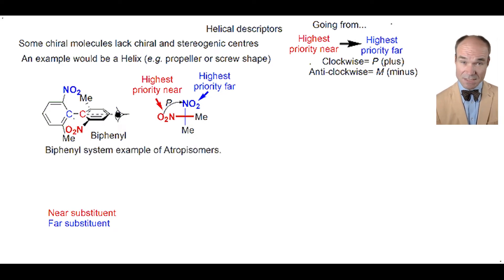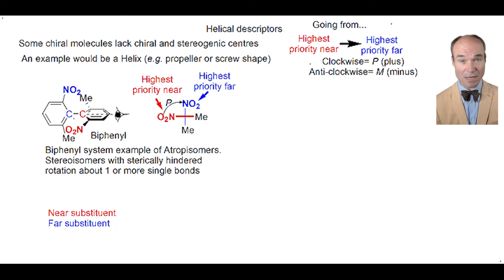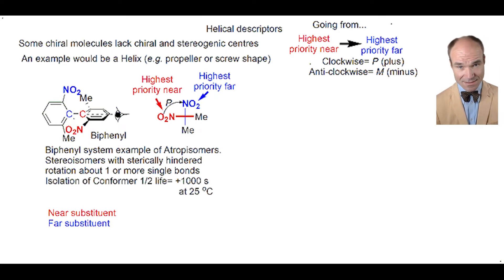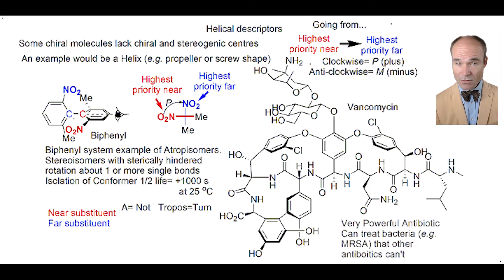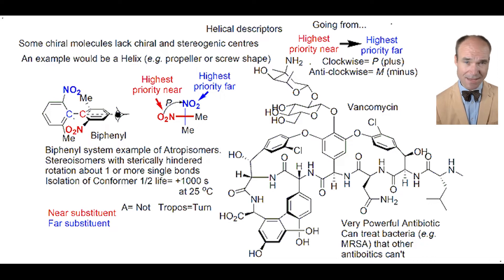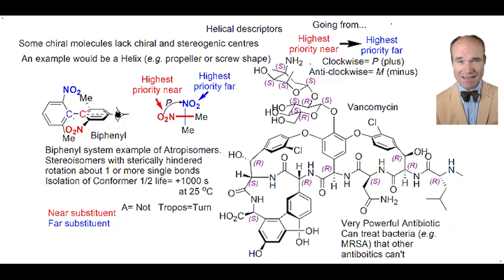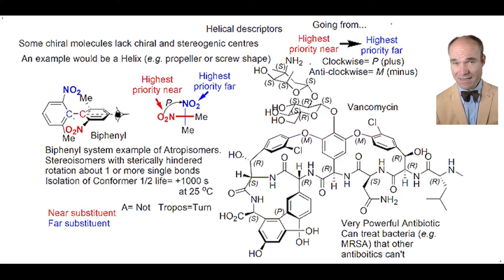The biphenyl system demonstrates an example of atropisomers. These are stereoisomers that have sterically hindered rotation about one or more single bonds, where the conformer's isolation has a half-life of greater than 1,000 seconds at 25 degrees Celsius. 'Tropos' means turn, and 'a' means not. This is vancomycin, a potent antibiotic that, even in these times of increased bacterial resistance, can treat superbugs such as methicillin-resistant Staphylococcus aureus. This beautiful structure contains 18 stereogenic centers and three atropisomers, including one biphenyl and two diphenyl ethers, and has been synthesized by a number of groups.